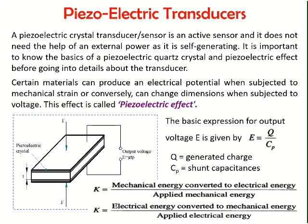Only a few materials exhibit the property of producing an electrical potential when subjected to mechanical strain, or conversely, can change dimensions when subjected to voltage — this is known as the piezoelectric effect. The basic expression for the output voltage E equals q divided by Cp, where q represents the amount of charges generated and Cp represents shunt capacitance, because the piezoelectric material is kept between two electrode plates, producing its own capacitance.